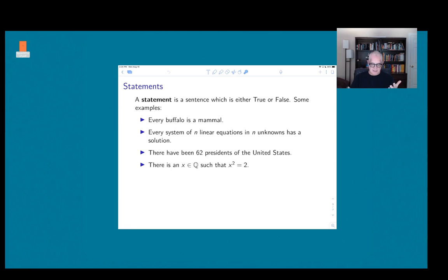Since I said every system of n linear equations in n unknowns, that must include both kinds, so this statement is either true or false. 'There have been 62 presidents'—that happens to be a false statement, but it's still a statement because either there have been or there haven't been 62 presidents. My last example is 'there's a rational number x such that x² = 2.' Again, this is a false statement—there isn't such an x—but it's still definitive, it's a statement because it's either true or false.